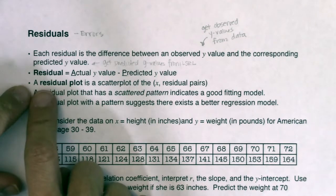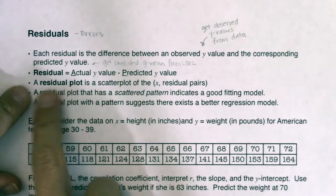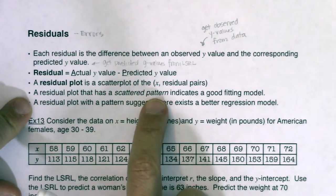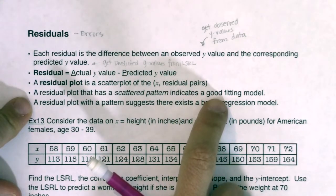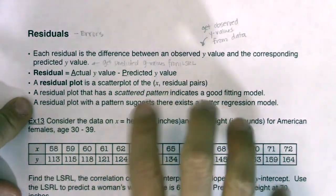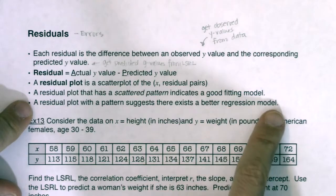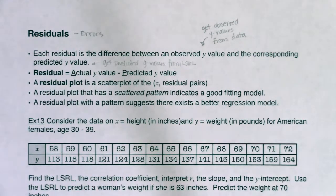Instead of plotting L1 against L2 like a scatter plot, for a residual plot we plot L1 against our residuals. In a residual plot, you want to see a scattered pattern — you actually want to see a mess. Unlike the scatter plot where you want to see a line, in the residual plot a hot mess means you have a good fitting model. A pattern in the residual plot suggests there exists a better regression model.